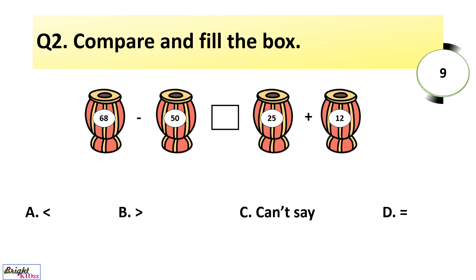Compare and fill the box. Here we can see 68 minus 15 becomes 18 and 25 plus 12 becomes 37, so 18 is smaller than 37.